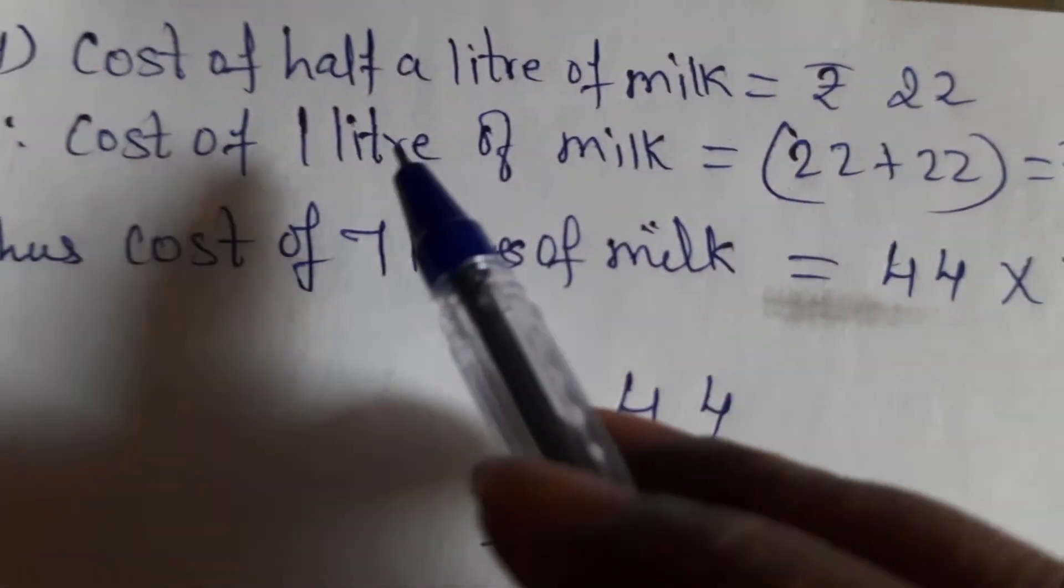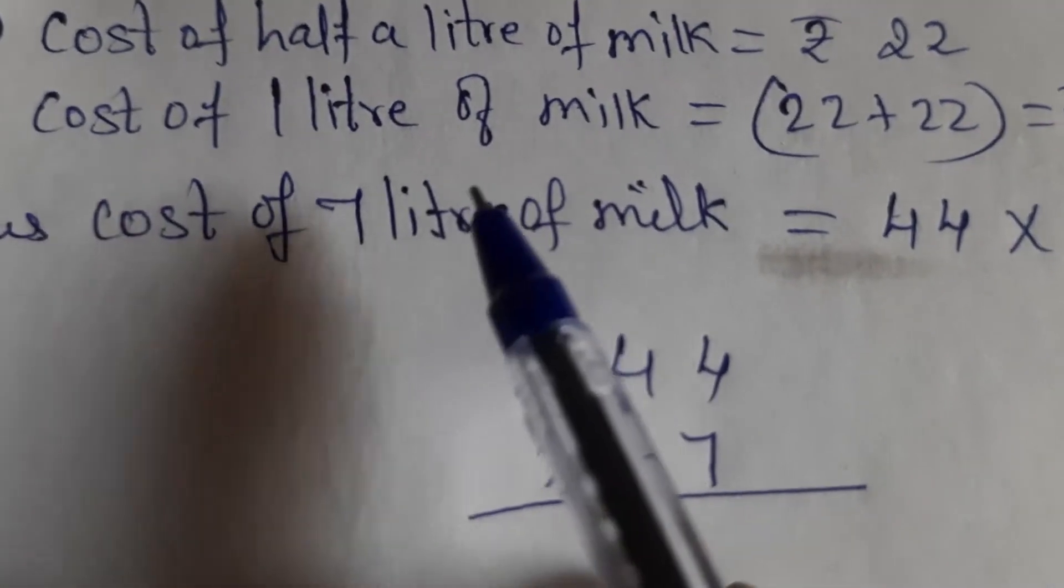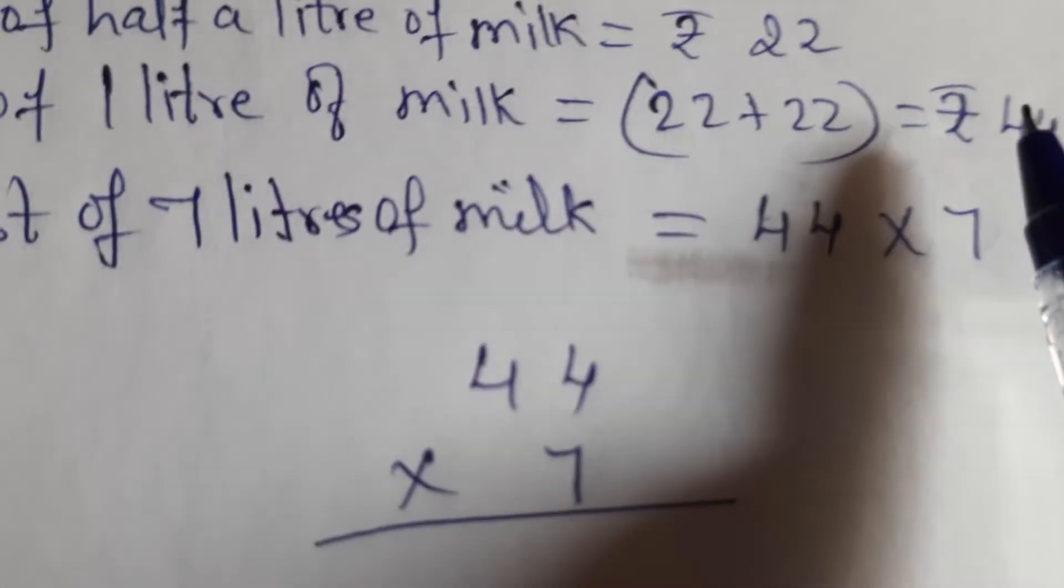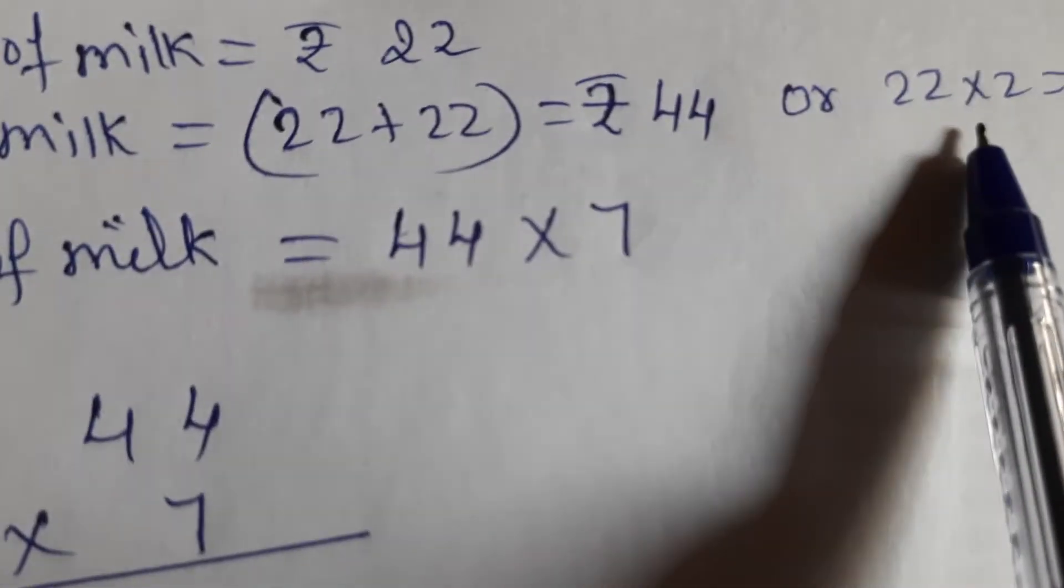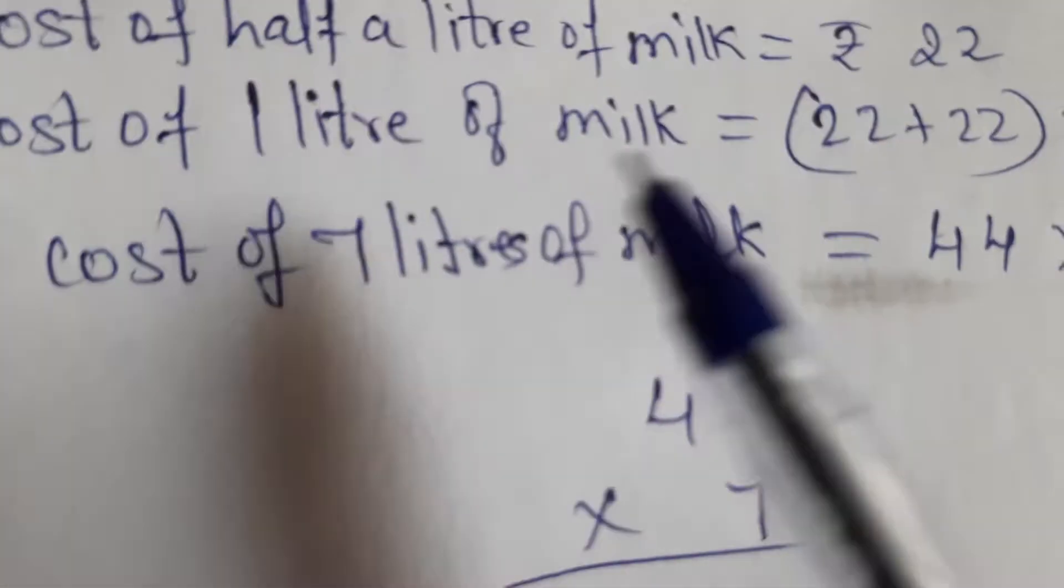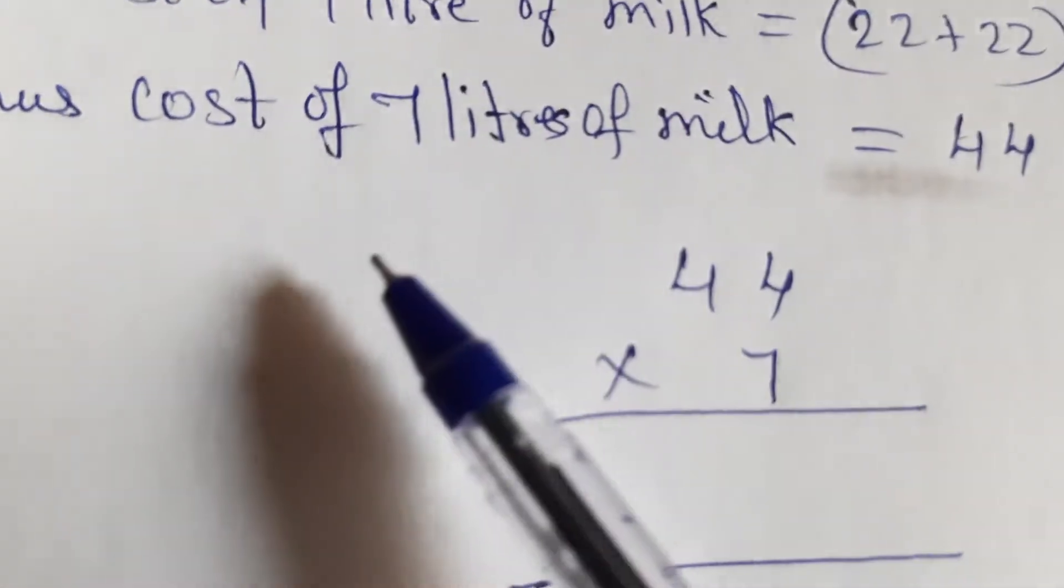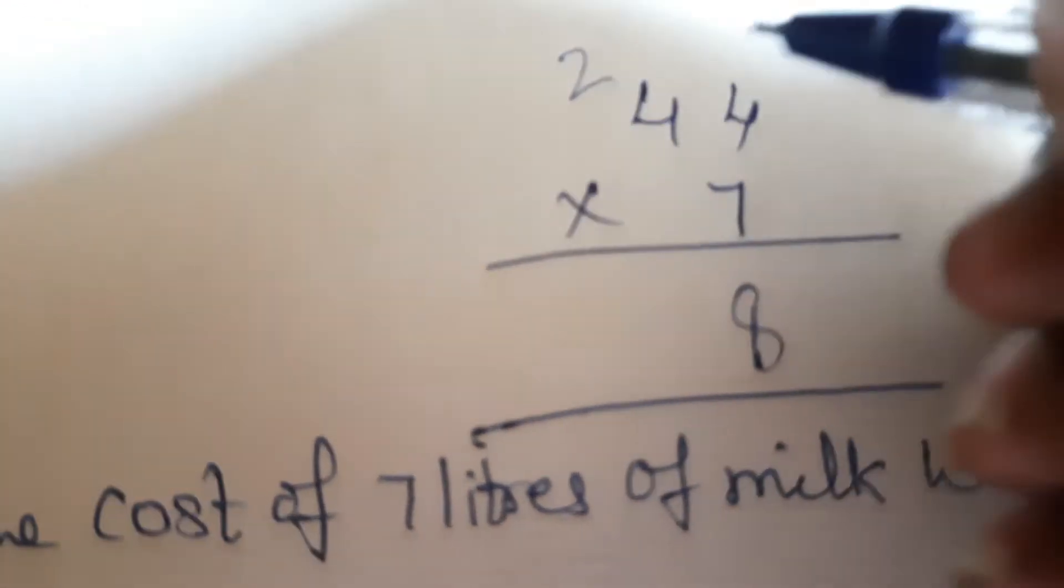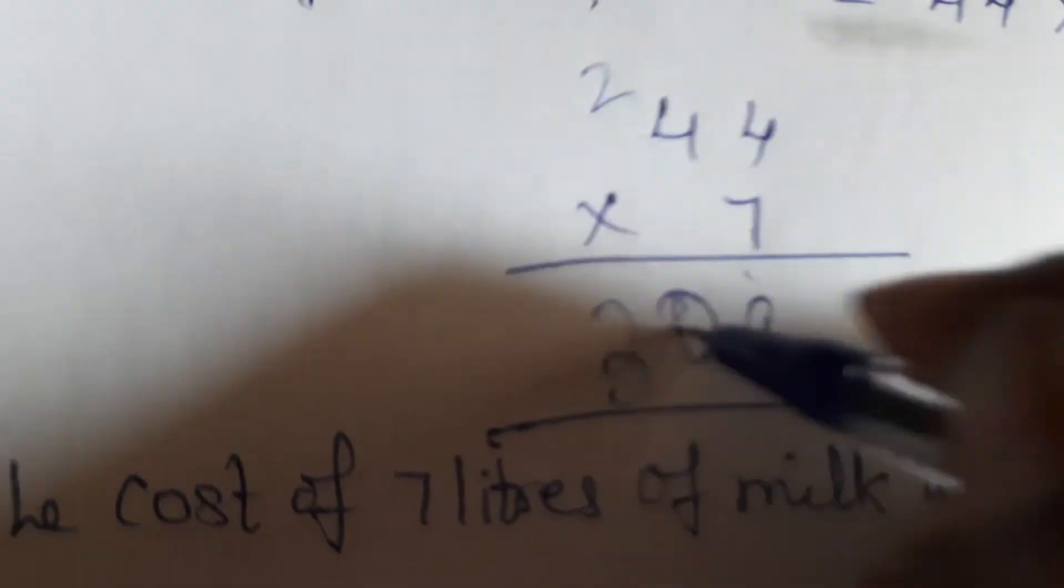So the fourth sum. Cost of half a liter of milk is rupees 22. So first we will find out 1 liter children. Cost of 1 liter of milk in simple way 22 plus 22 that is 44 or you multiply 22 into 2 will give you 44. Whichever way you want 22 into 2 will give you 44. Okay. So first you find out the cost of 1 liter of milk and then we can multiply with 44. So cost of 7 liters of milk is equal to 44 into 7. So let us multiply 7 4s are 28. 8 and 2 carried here. 7 4s are 28. 29, 30. 308.